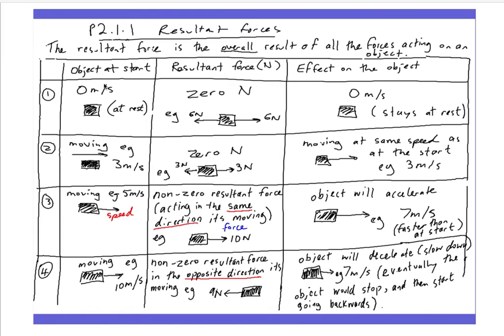In the first example, the object at the start is not moving, it's at rest. When you look at the forces acting on the object, let's say there's six newtons forwards and six newtons backwards. They are equal in size but opposite in direction so they cancel out like a tug of war team. So there's zero newtons acting on that object. The effect on the object - well if it's not moving at the start and it's got zero force acting on it, it's just going to stay at rest.